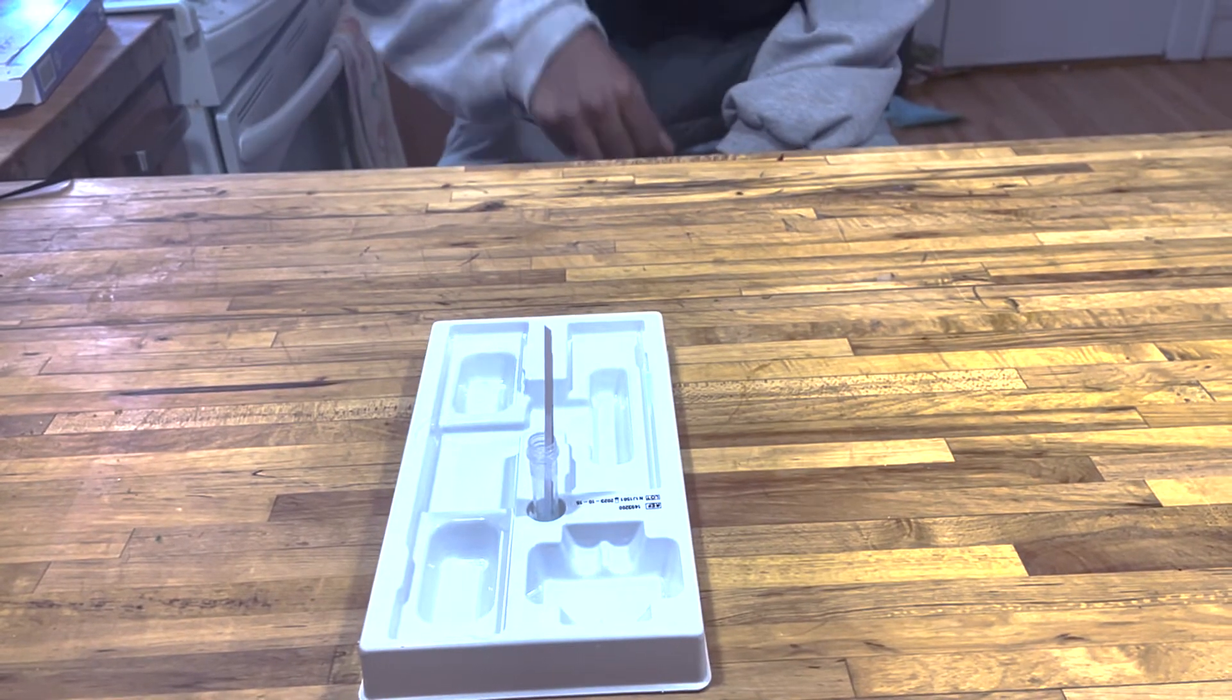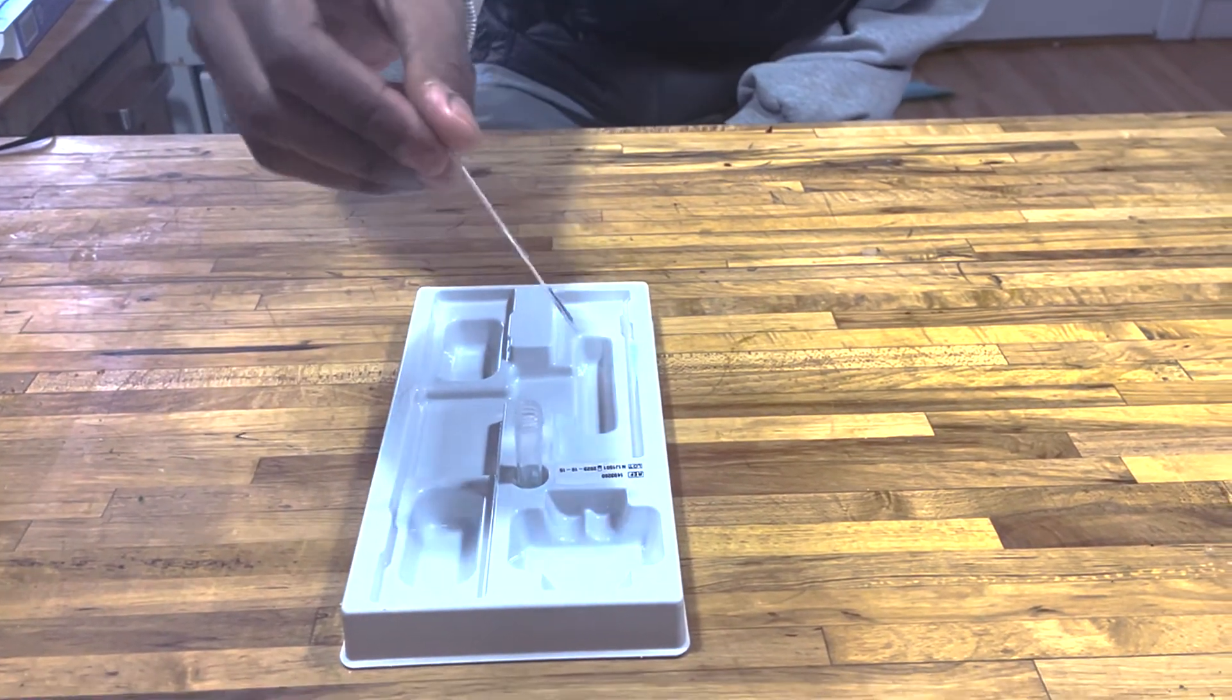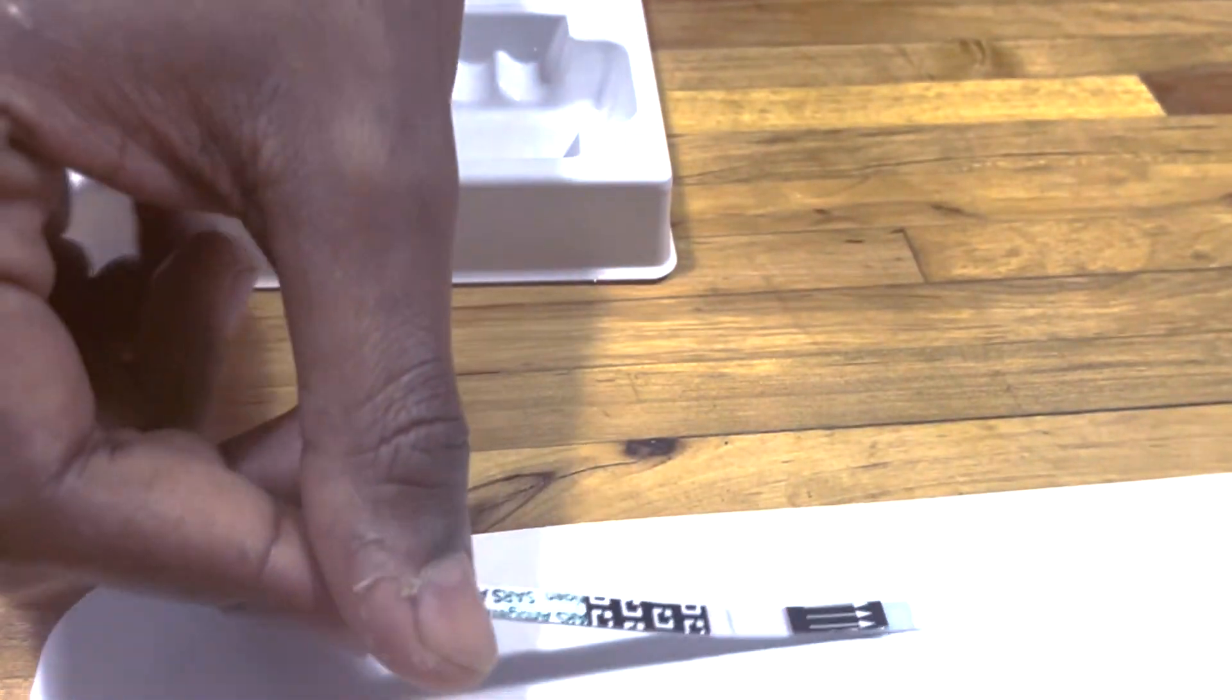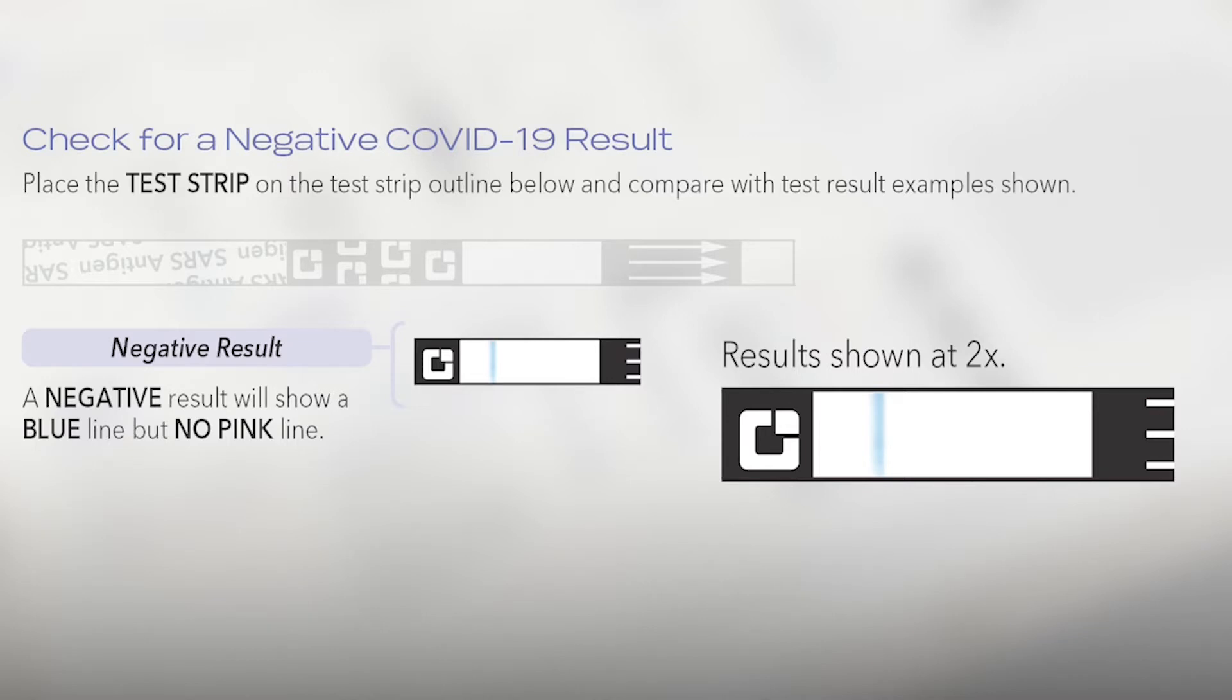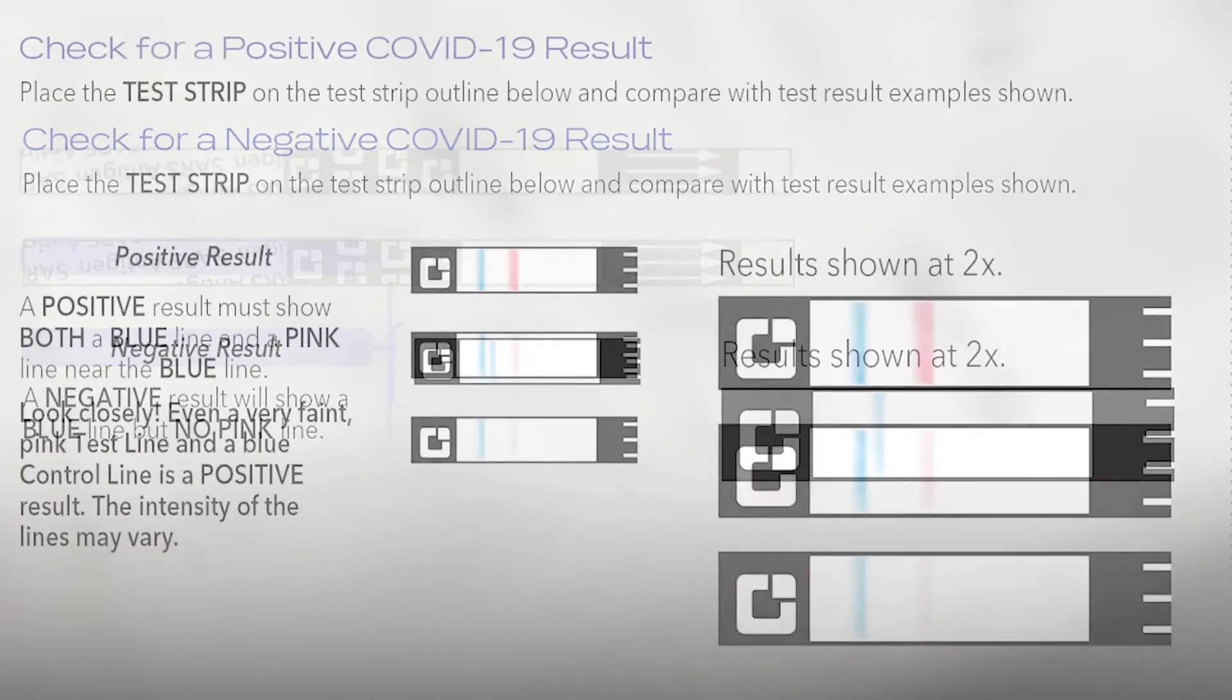Remove the test strip from the tube. A negative test result, which means you do not have COVID, will only show a blue line, no pink line.